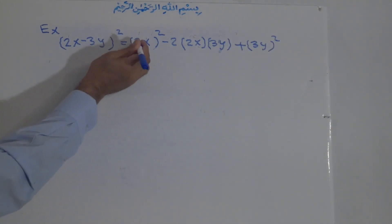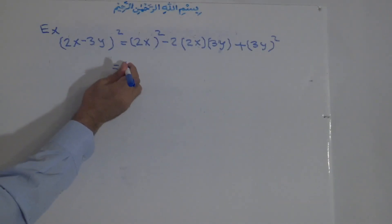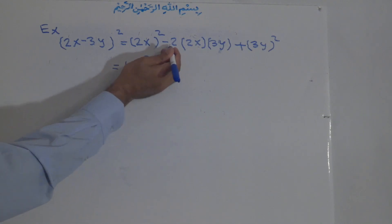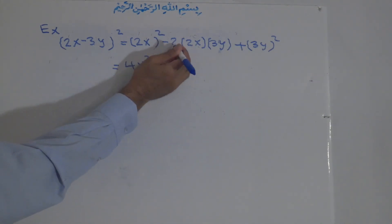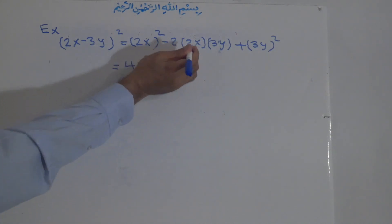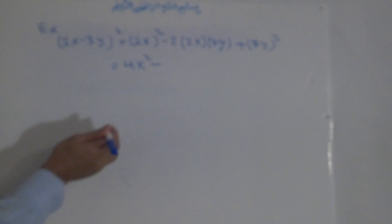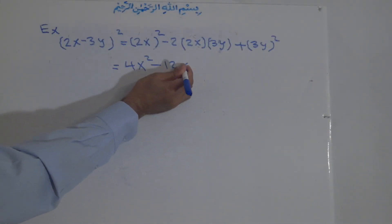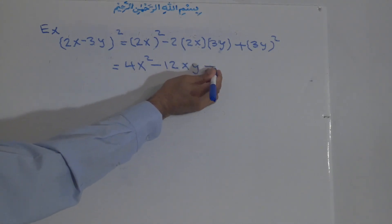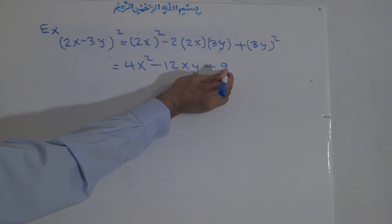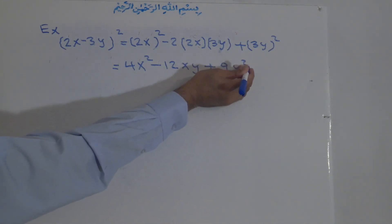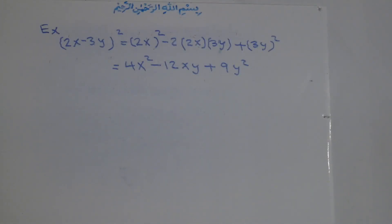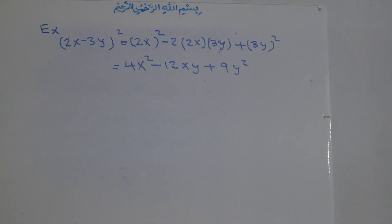Now we simplify: the square of 2 is 4 and the square of x is x squared. Then negative 2 times 2 is 4, times 3 is 12, and x times y is xy. Plus the square of 3 is 9 and the square of y is y squared. So 2x minus 3y to the power of two equals 4x squared minus 12xy plus 9y squared.